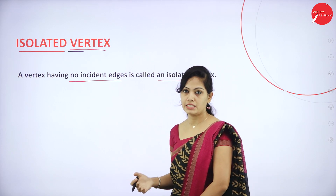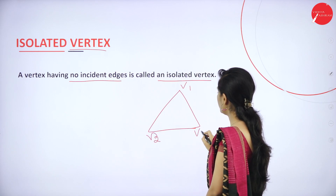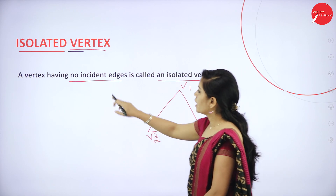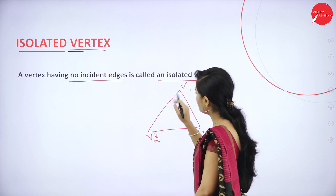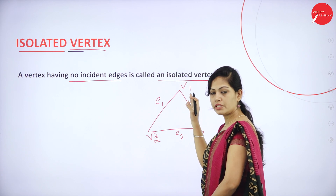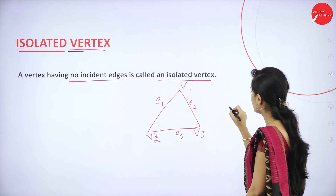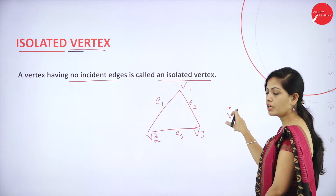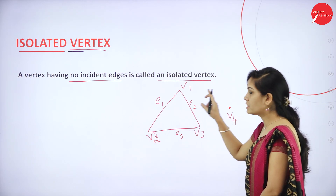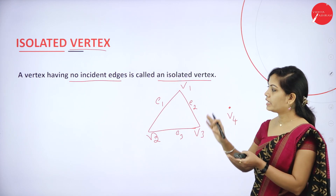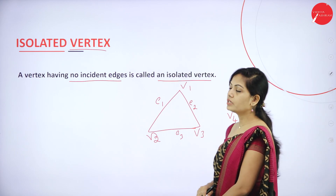For example, consider a graph with vertices V1, V2, V3, and an additional vertex V4. V1, V2, and V3 are connected by edges E1, E2, and E3. V4 is not connected to any other vertex or edge. Since V4 has no incident edges, it is called an isolated vertex.